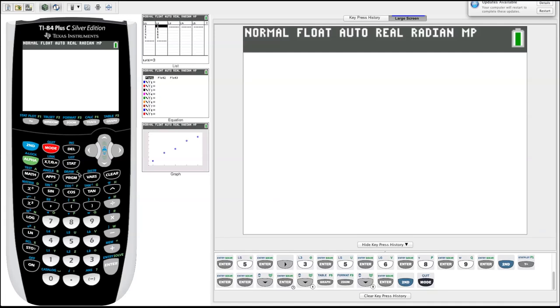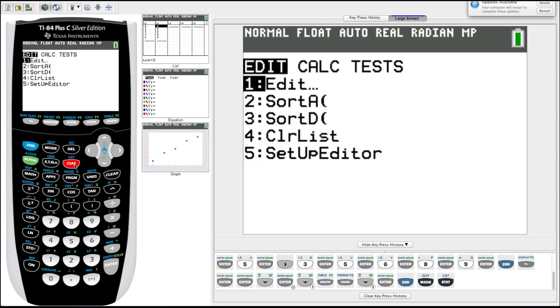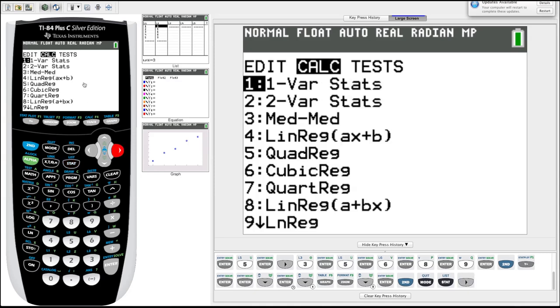And so then to find our linear regression line, we will go to the stat button. But this time, instead of going into edit, we're going to arrow over to this calc menu. We've got a lot of options here, a lot of useful ones. We're going to arrow down to number four, linear. LinReg is short for linear regression. That's the one we want because it looks like our data will fit very well on a line.